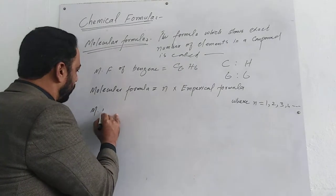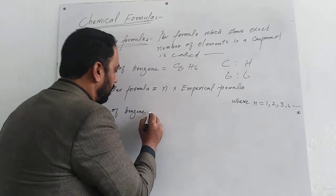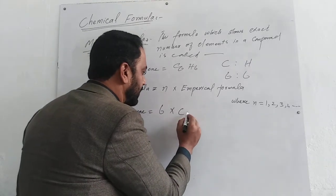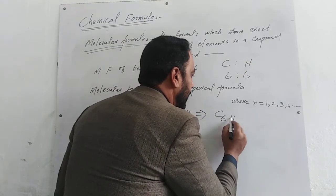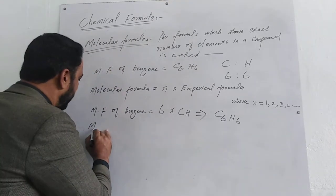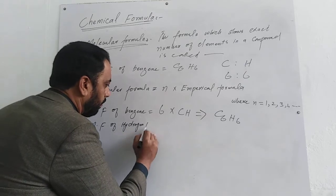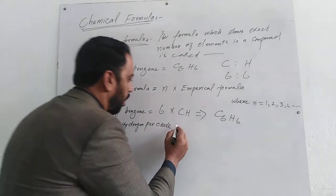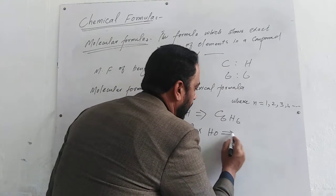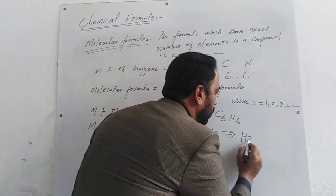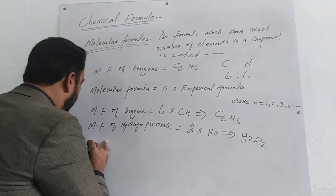Molecular formula of benzene: 6 multiplied by CH — اس سے آتا ہے C6H6. Similarly, molecular formula of hydrogen peroxide: 2 multiplied by HO — کیا آتا ہے H2O2, which shows the exact number of atoms.